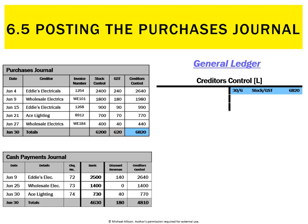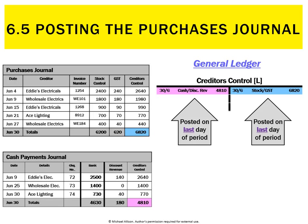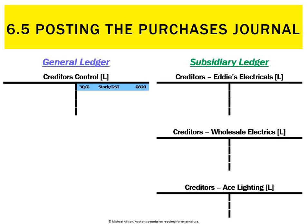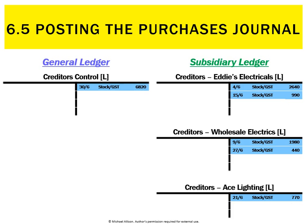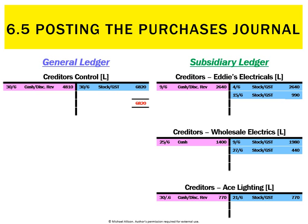In summary: the total from the purchases journal — the total amount we owe creditors — is one giant credit posted on the last day of the period. The amount in the cash payments journal — the amount creditors go down — is one giant debit, also posted on the last day of the period. The total one giant credit in creditors control is the sum of all individual transactions in the subsidiary accounts, and the giant debit recording cash paid and discount revenue from creditors is broken down individually in the subsidiary ledger.